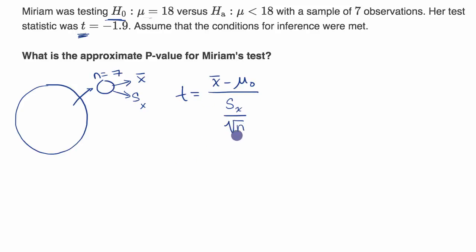Well, they've calculated this ahead of time for us. This is equal to negative 1.9. And so if we think about a t-distribution,